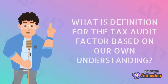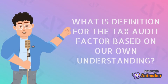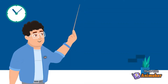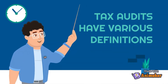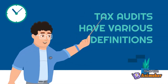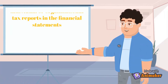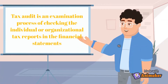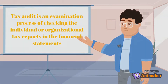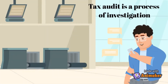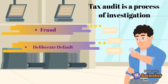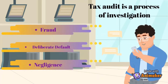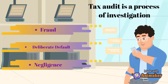What is the definition of tax audit based on our own understanding? Tax audits have various definitions with similar meaning. By referring to all definitions collected from articles and journals, we conclude that a tax audit is an examination process of checking individual or organizational tax reports in financial statements — a process of investigation aimed at identifying the extent of fraud, deliberate default, or negligence committed by a taxpayer and obtaining evidence for probable prosecution of the culprit.